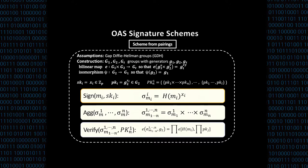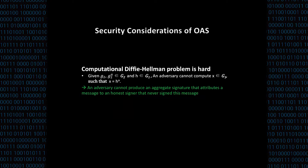We call our scheme optimistic because it offers the best performance — equal to multi-signature — when all signers sign the same message, and worst performance — equivalent to aggregate signature — when all signers sign distinct messages. The security of our scheme is based on the computational Diffie-Hellman problem: if an adversary can produce an aggregate signature attributing a message to an honest signer who didn't sign it, then it can break the computational co-Diffie-Hellman problem.